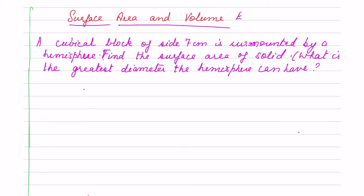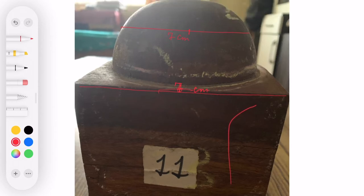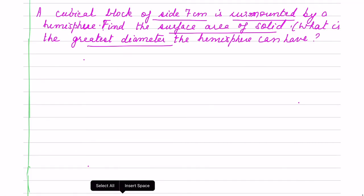Now, what we have to find out first, the greatest diameter the hemisphere can have, if side of cube is 7 centimeter. If you see the greatest diameter will be also 7 centimeter and radius will be 7 by 2 centimeter. So, let's solve the question. You can see here, in a cube, if it is 7 centimeter diameter is there, maximum we can take that is 7 centimeter diameter.